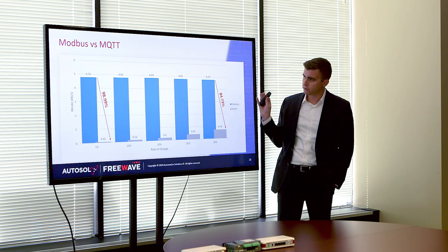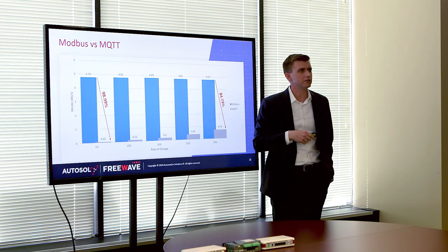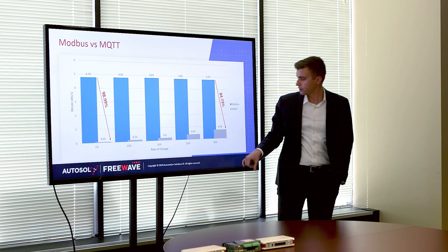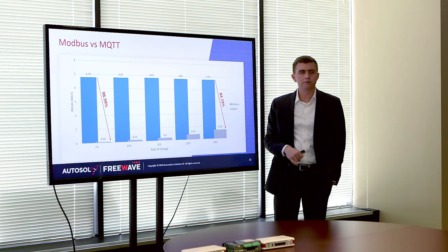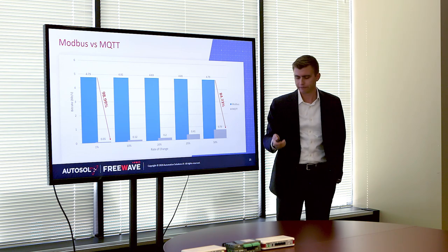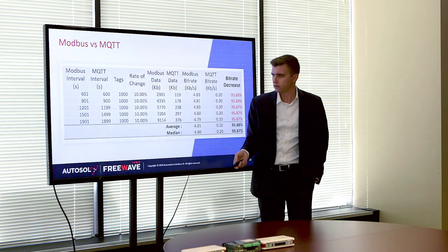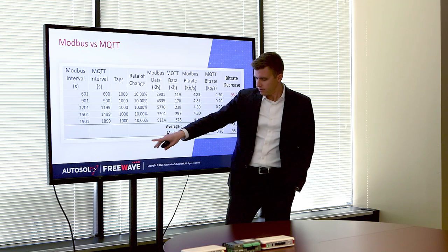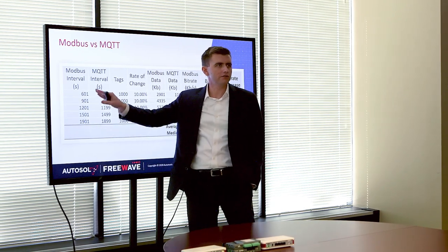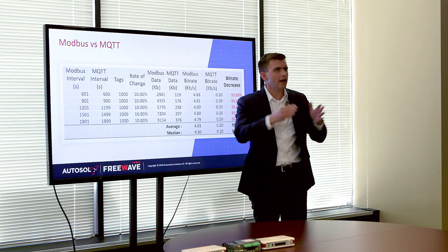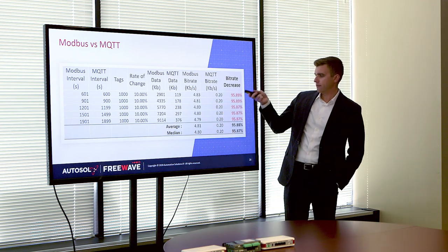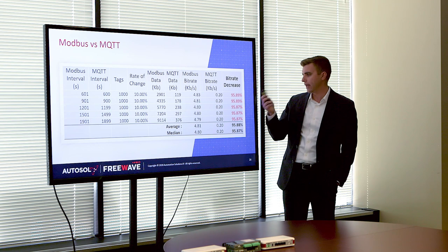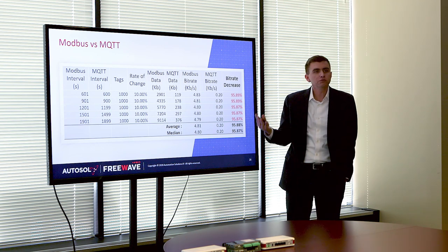On a bar graph, the blue is your traditional poll-response in Modbus and the gray is how much bandwidth was consumed via MQTT for bringing back the same data. For Modbus with rate of change held steady at 10% but time interval going from 10 to 30 minutes, we see a standard decrease of bandwidth consumption of 95.8 to 96% reduction across all intervals — which we would expect, because with traditional poll-response every poll occupies the same amount of data regardless.